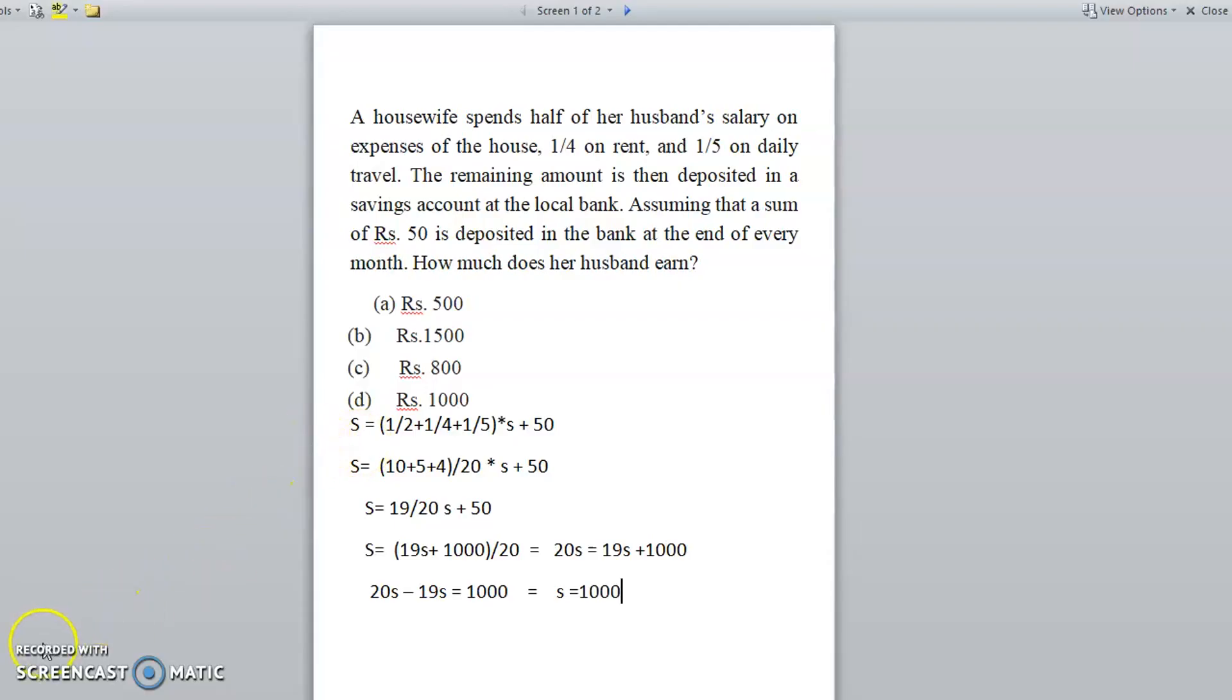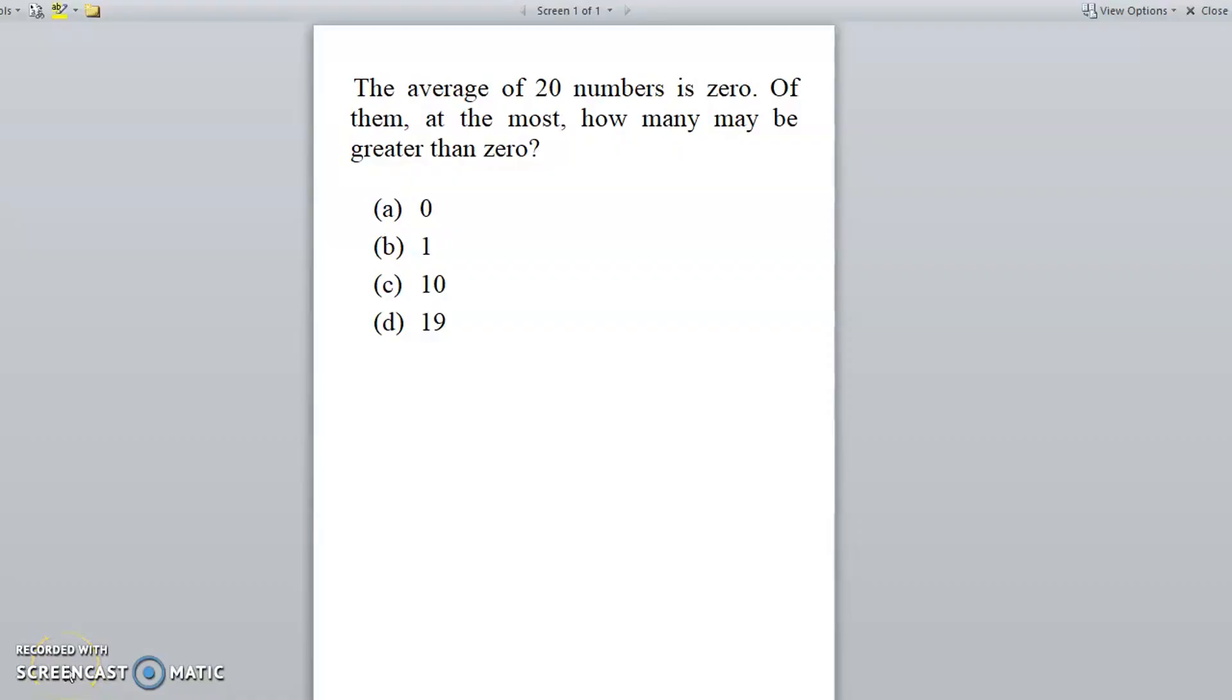Next question is: the average of 20 numbers is 0. Of them, at the most, how many may be greater than 0? So this is very easy to find the answer if you assume all the 19 numbers are positive. Suppose you assume like that, even if all the 19 numbers are positive, for example, the sum of 19 numbers.